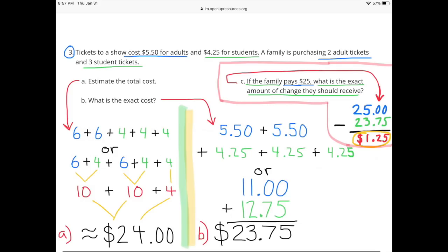Problem 3: Tickets to a show cost $5.50 for adults and $4.25 for students. A family is purchasing two adult tickets and three student tickets. Part A: Estimate the cost.